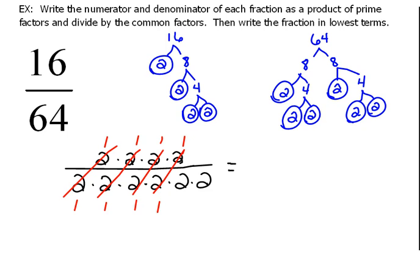Now in the numerator, we have left 1 times 1 times 1 times 1, which is just 1. And in the denominator, when we multiply all of these together, we have 4. So this will reduce down to 1/4.